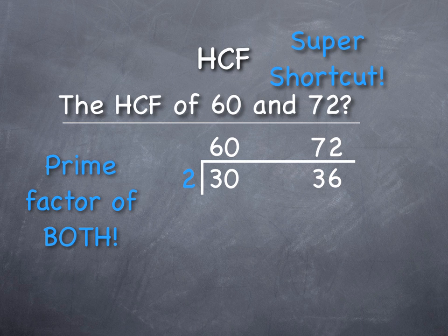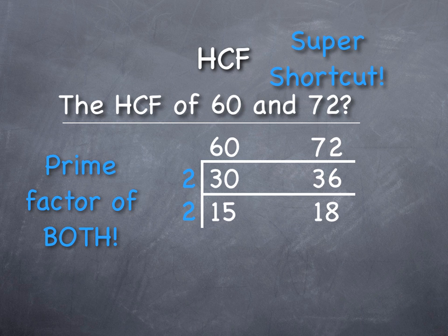Looks like a ladder there. Two goes into 60 thirty times and into 72 thirty-six times. Again, does two go into both of them? Yes, it does. And that gives me 15 and 18.